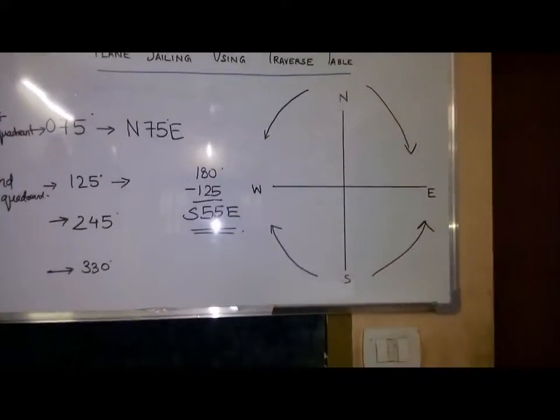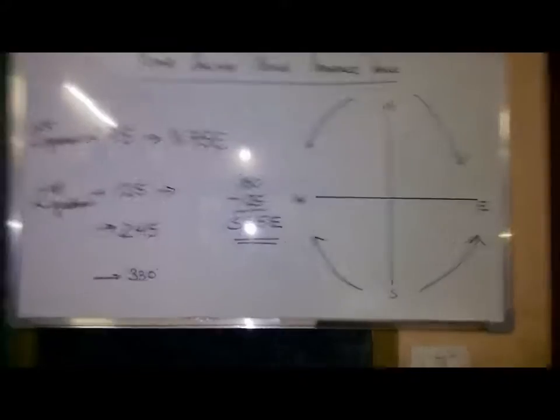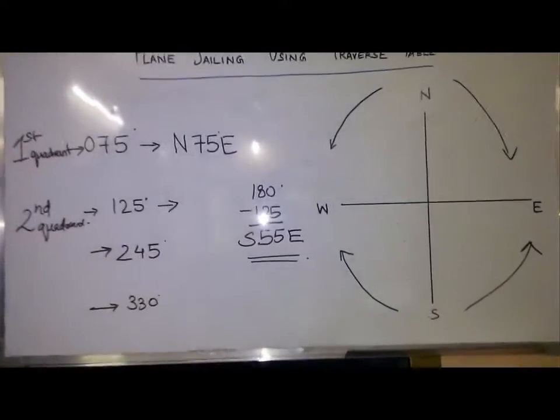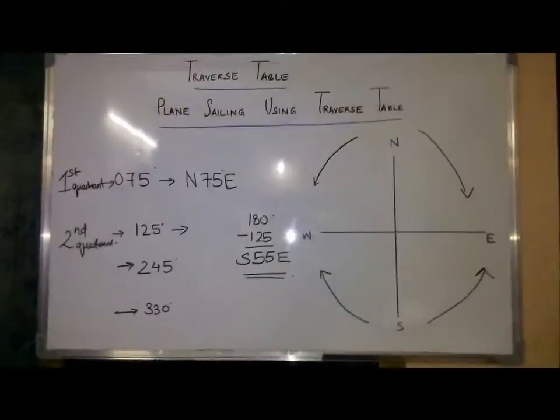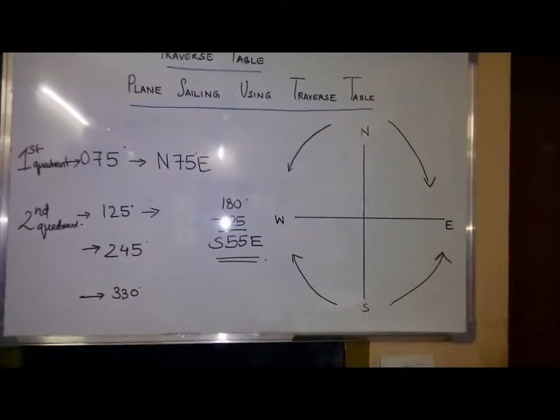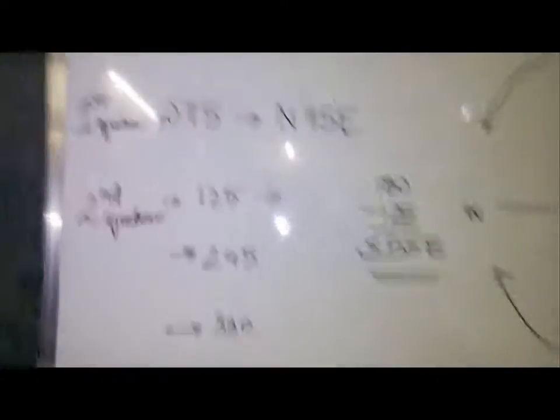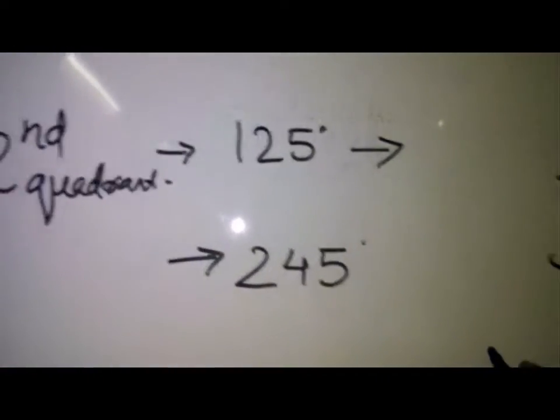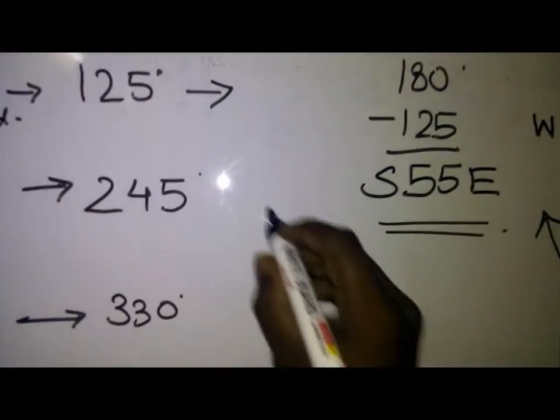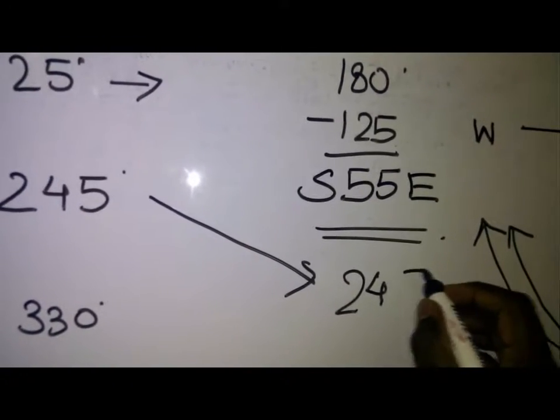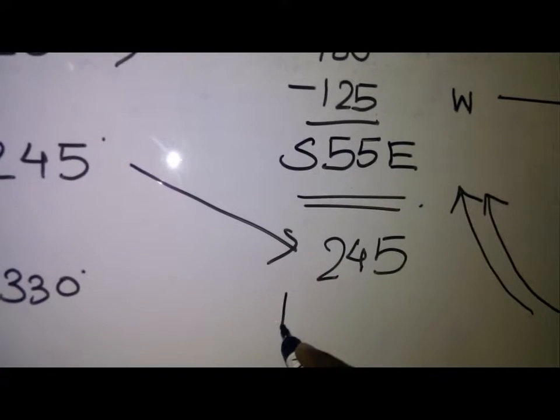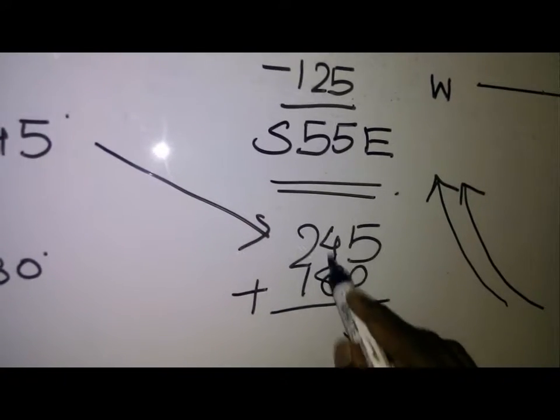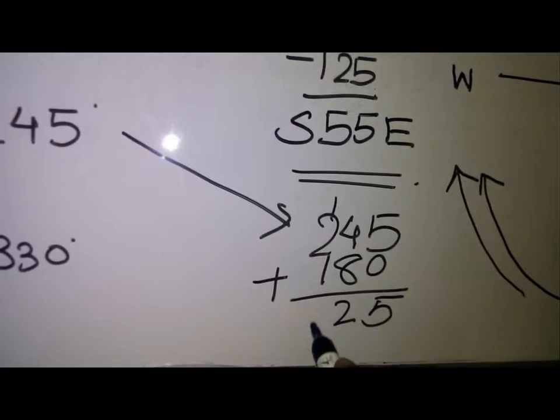Now the next one is the third quadrant, 245. 245 three figure notation course comes in the third quadrant. For this we have to first see the direction, south to the west. We will be adding 180 to 245 because it is from south to the west. So 245 plus 180.